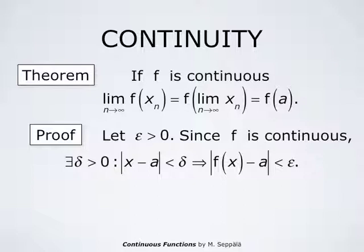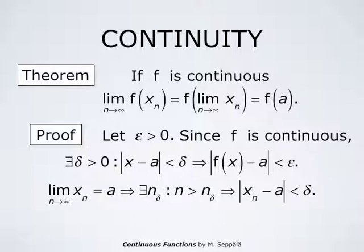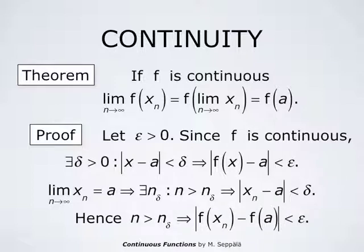This is the definition of continuity at the point. On the other hand, the sequence x_n has the limit a. Therefore, there is an index N_delta such that whenever n is larger than N_delta, the absolute value of x_n minus a is less than delta. So we can always find such an index N_delta, and this means that if n is larger than N_delta, then the absolute value of f at x_n minus f at a is less than epsilon. This completes the proof.